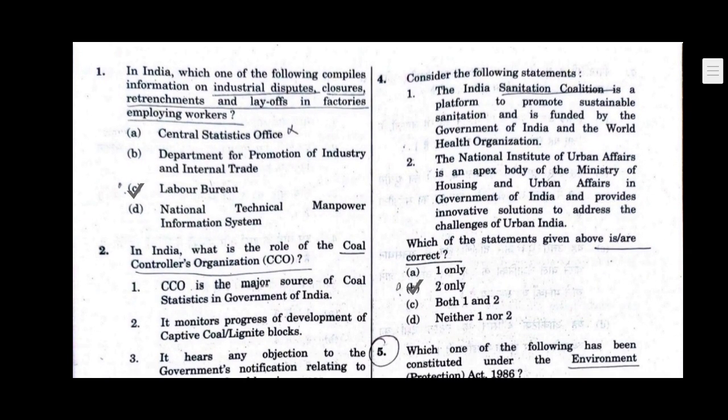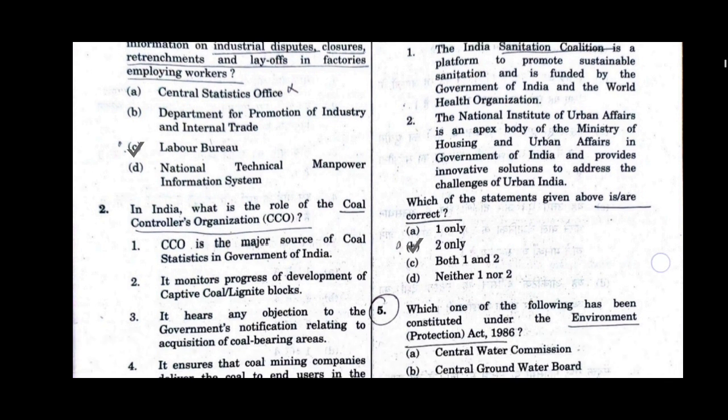Question number 1. In India, which one of the following compiles information on industrial disputes, closures, retrenchments and layoffs in factories employing workers? Option C will be the correct answer: Labor Bureau.